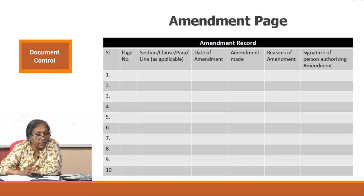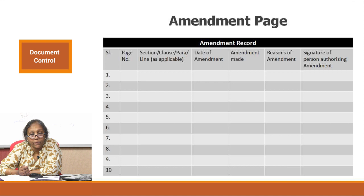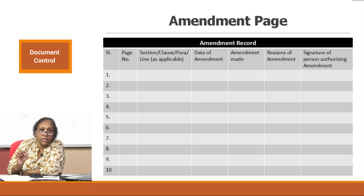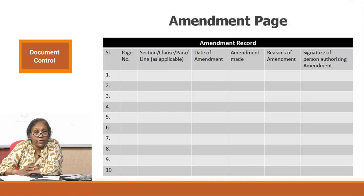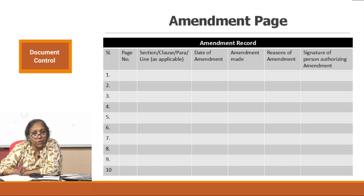Every amendment should be documented in the amendment page. The lab decides how many amendments are allowed and how amendments will be conveyed to readers before and after. The same amendment page format used in your quality manual can be used; every SOP and QSP should have an amendment list inside the manual itself. For formats, you can have a separate amendment list document capturing all format changes - for example: format F05 changed on such a date for such a reason by such an authorized person.